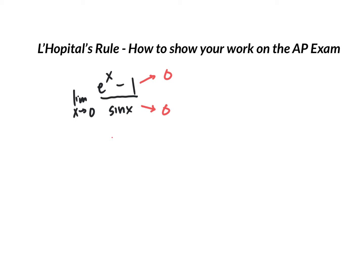Another way you could write this, so I'll put an or, is to state the limit as x approaches 0 of e to the x minus 1 equals 0 and the limit as x approaches 0 of sine x equals 0.